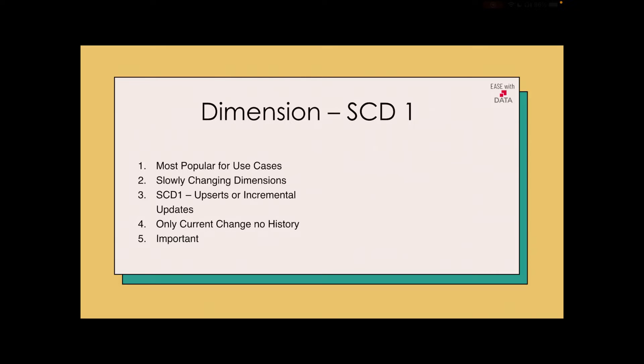In case of new data, it is inserted. If the data is existing, it is updated. This classification of insert and update is done based on the natural key of the dimension. This dimension only maintains the current record. There is no history maintained for this type of dimension.